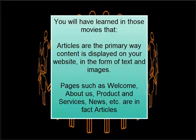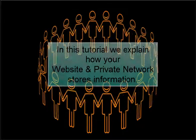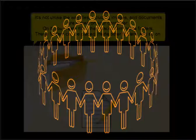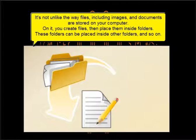You will have learned in those movies that articles are the primary way content is displayed on your website, in the form of text and images. Pages such as Welcome, About Us, Product and Services, News, etc., are in fact articles. In this tutorial, we explain how your website and private network stores information. It's not unlike the way files, including images, and documents are stored on your computer.